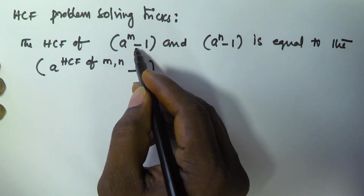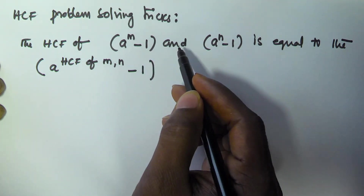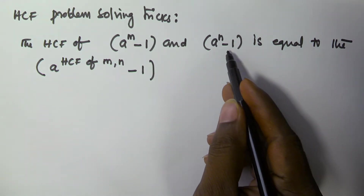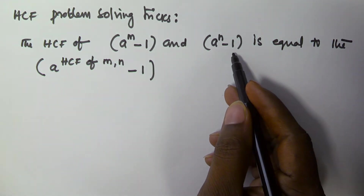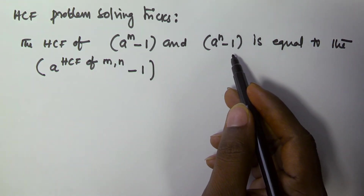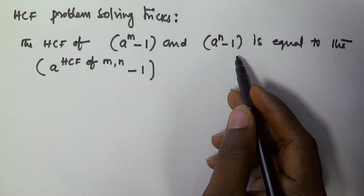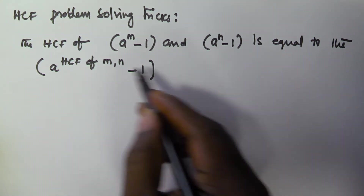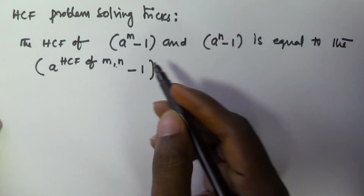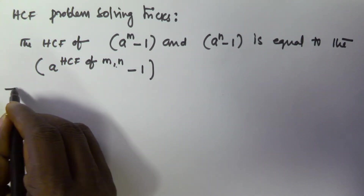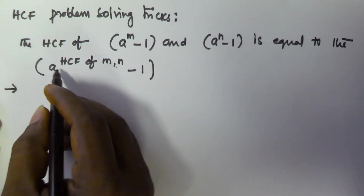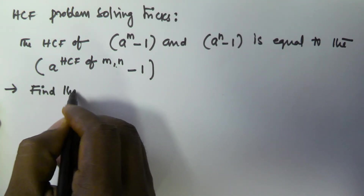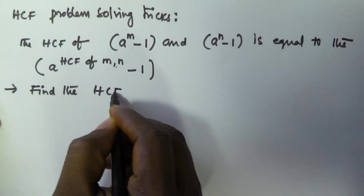So the HCF of a to the power of m minus 1 and a to the power of n minus 1 is equal to a to the power of HCF of m comma n, minus 1. Let's solve one example based on this concept: find the HCF of...